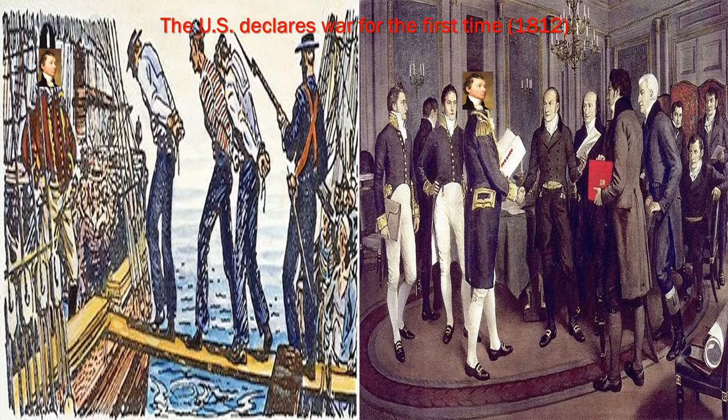James Madison then promotes James Monroe to be his Secretary of State, putting him in charge of our relationship with foreign countries. He's in charge of this at the time when the British and the French are at war, impressing American sailors and attacking our merchant ships. When the United States declares war for the very first time in 1812, James Monroe, as Secretary of State, is there for that event as well.